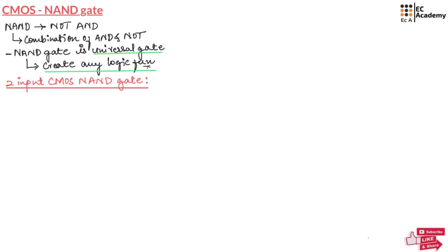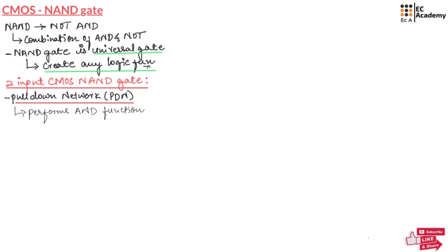The first network is the pull-down network, also known as PDN. This pull-down network performs the AND function and it consists of two NMOS transistors. The NMOS transistor will be ON when the gate is applied with logic 1, and it will be OFF when the gate is applied with logic 0. Since it is a two-input NAND gate, it takes two inputs A and B and performs A dot B.